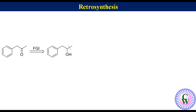Cleavage of this C-C bond suggests that the alcohol can be obtained by the reaction between phenyl acetaldehyde and methyl magnesium bromide.